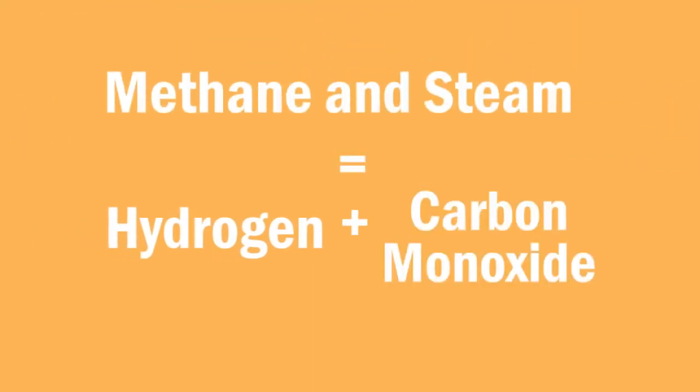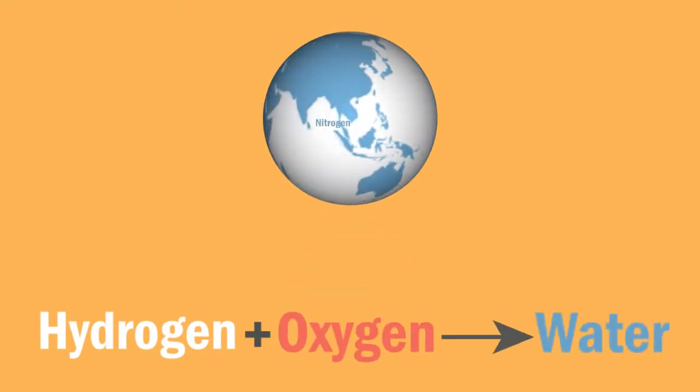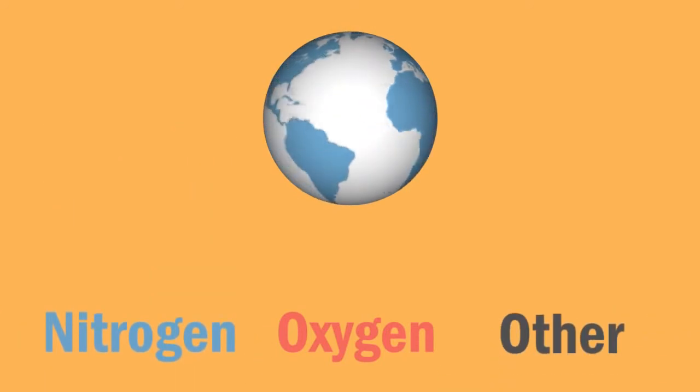Hydrogen is obtained from the reaction of methane and steam, producing carbon monoxide as a by-product. The hydrogen produced from this reaction also reacts with oxygen from air, producing water and leaving nitrogen behind. Recall that air is 77% nitrogen.